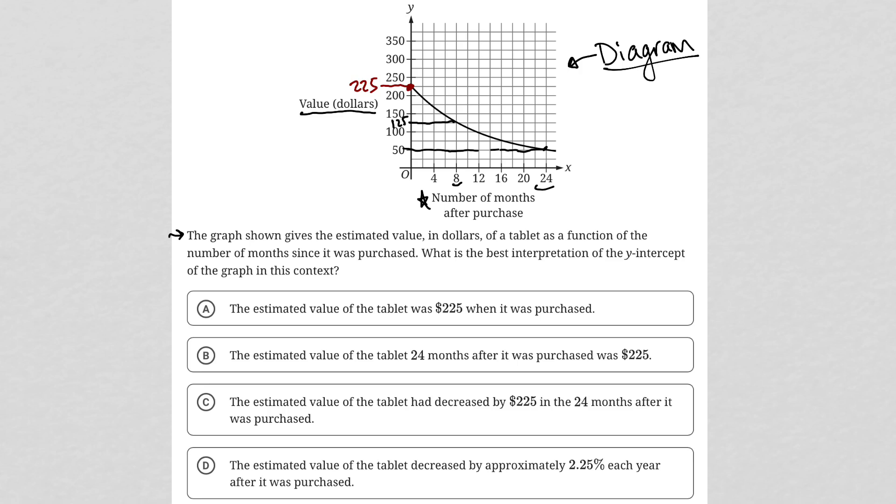Because the x-value represents the number of months after purchase, that means for zero months after purchase, it basically gives you the value at the time of purchase. So the tablet at the time of purchase must have been $225.